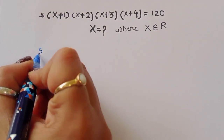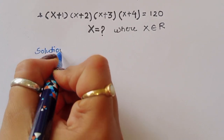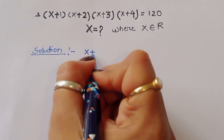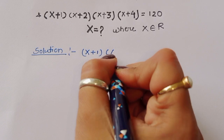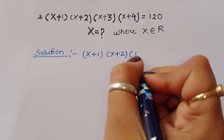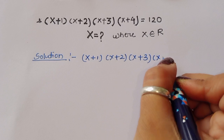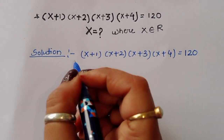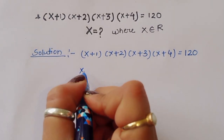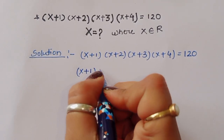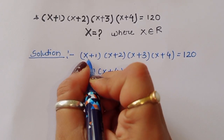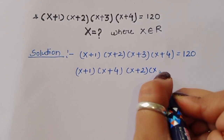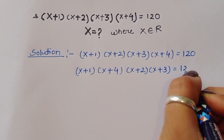Solution: The question is (x+1)(x+2)(x+3)(x+4) = 120. We can rearrange these terms. We group them as (x+1)(x+4) and (x+2)(x+3), which equals 120.